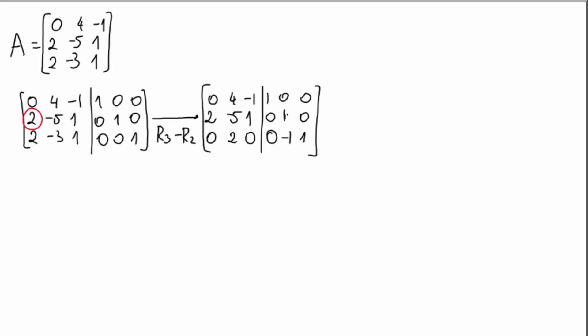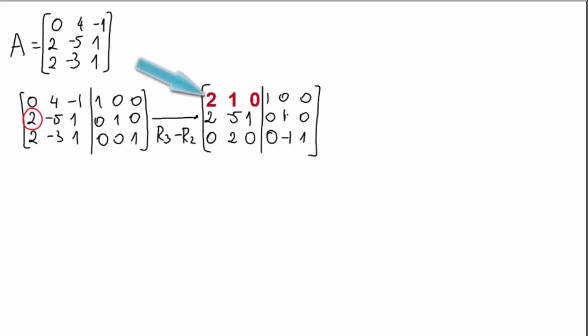In the next step we choose another pivot — the choice is arbitrary. However, you have to be careful: there is a 1 here, which looks like an easy pivot. But if you used that 1 to eliminate the negative 1 in its column, the operation R1 minus R2 would create a non-zero entry in the first pivot column, destroying the work already done.